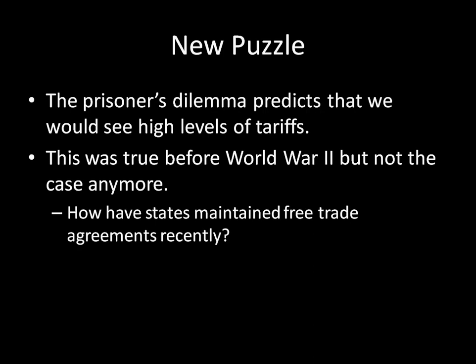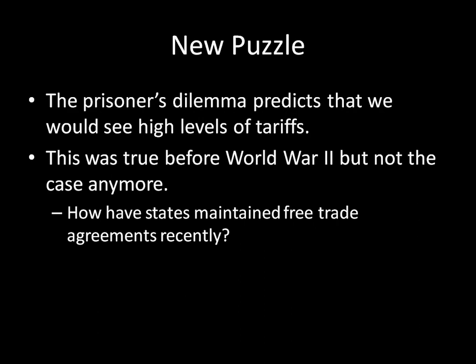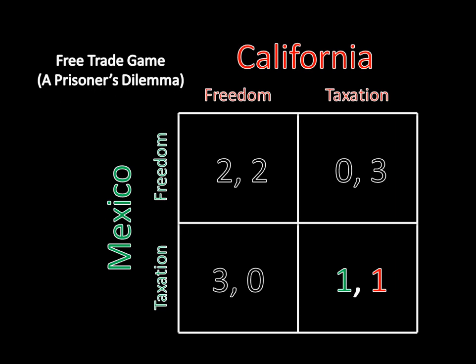But there's a new puzzle here. We've seen this model and know mutual taxation is the predicted outcome. The prisoner's dilemma predicts high levels of tariffs — and while this was true before World War II, it's not the case anymore. So the new question is: how have states maintained free trade agreements recently? Think about how we end up getting free trade outcomes and why they're sustainable long-term, even though our prediction from this game was the opposite. Next time we'll actually be talking about arms races. Join me then.